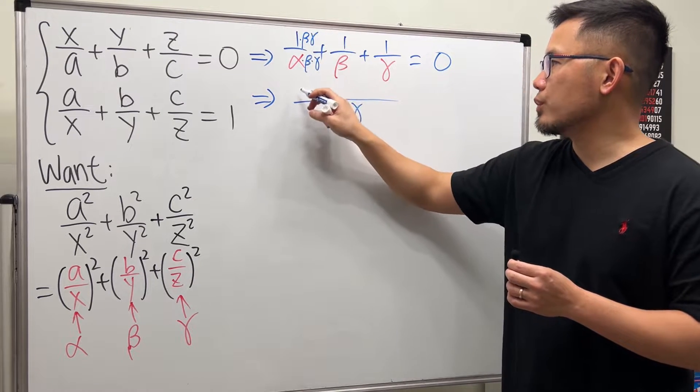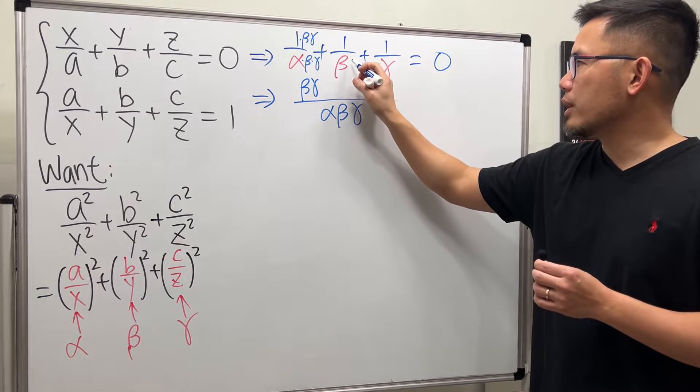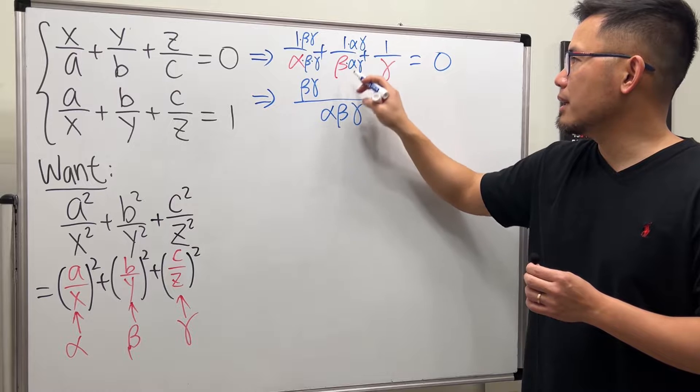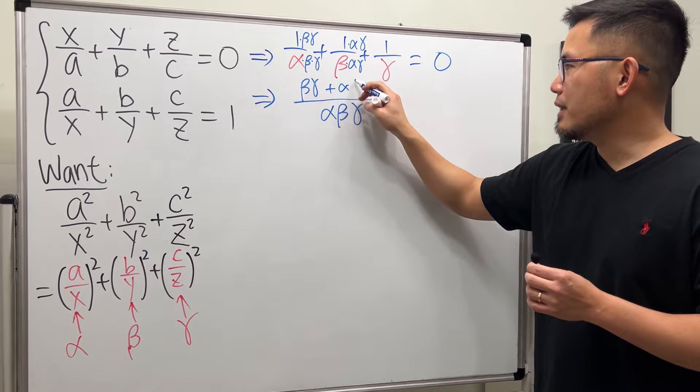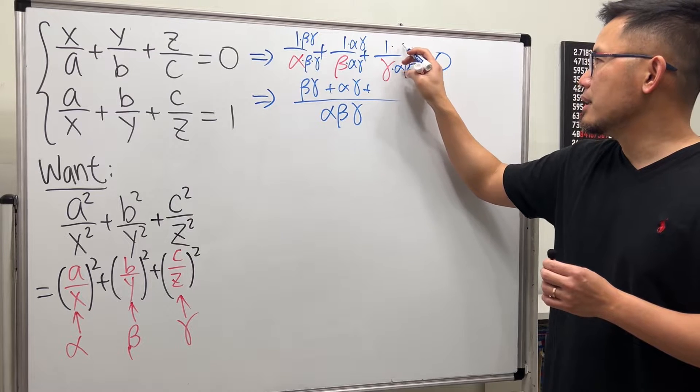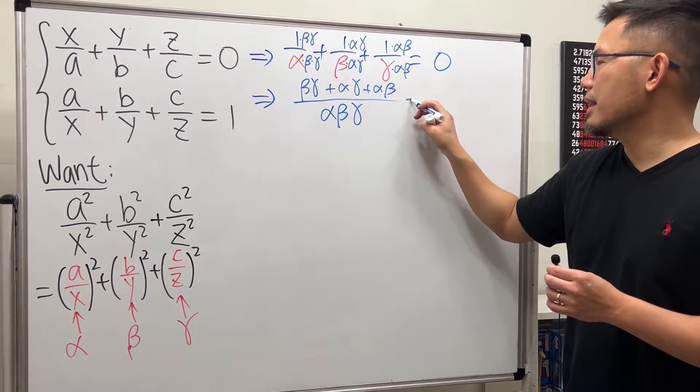So let's go ahead and do beta and gamma. So we have beta and gamma here. Here we have beta already. We need alpha and gamma. So this right here, we need alpha and gamma. So plus alpha and gamma. And lastly, we need the alpha and beta. Alpha and beta. So alpha and beta. And that's equal to 0.